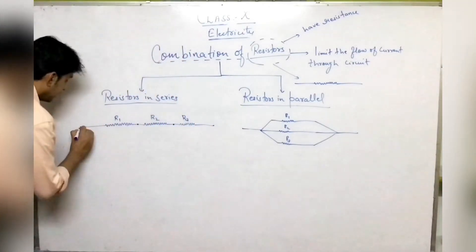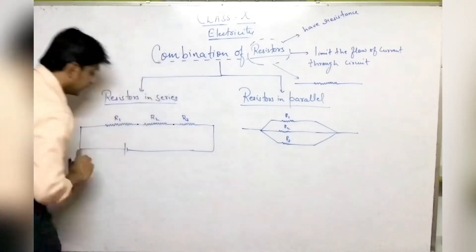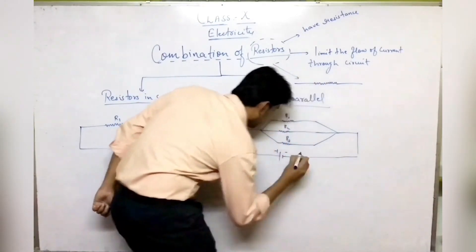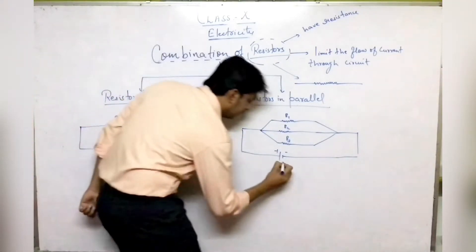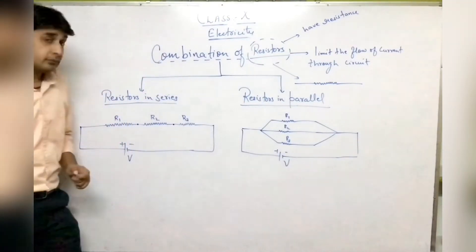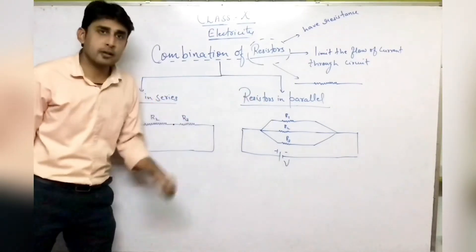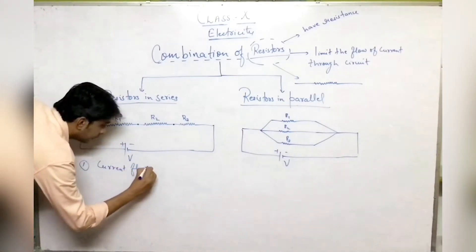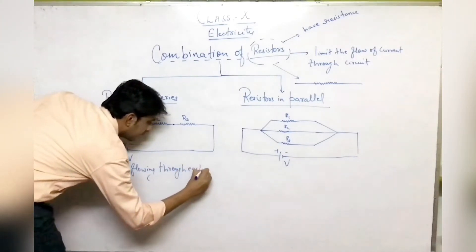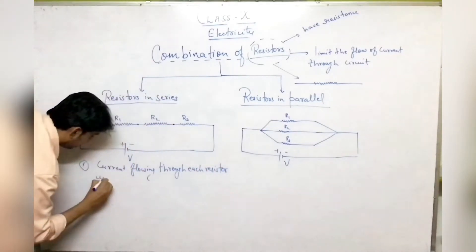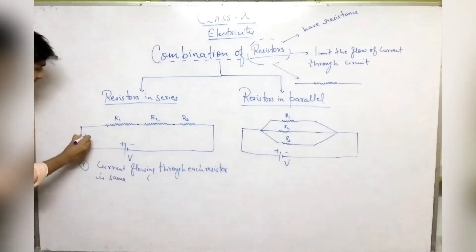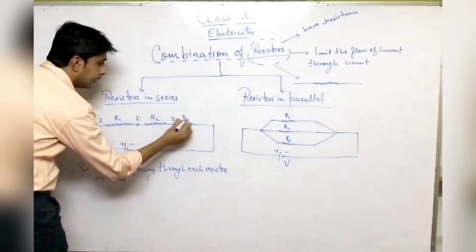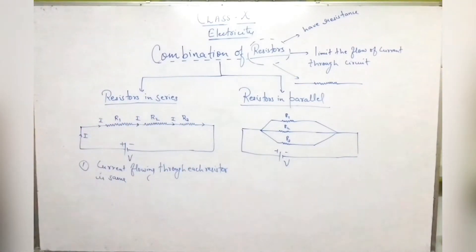Now we connect these three resistors with a cell — positive and negative terminals. The potential difference of each branch is V. The main difference between series and parallel combination is that in series combination, the current flowing through each resistor is the same. If current I is flowing in the circuit, the same current I will flow through R1, R2, and R3.